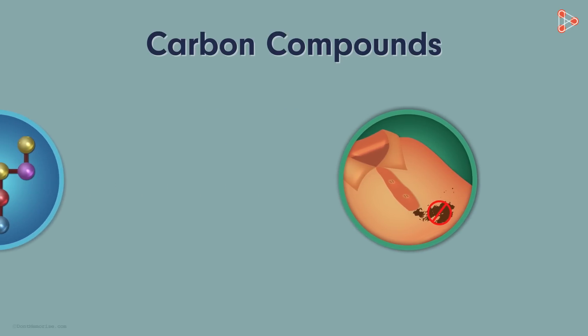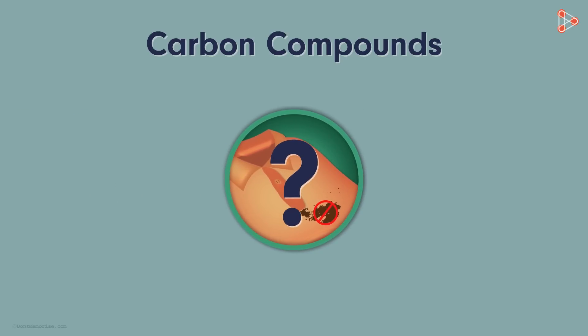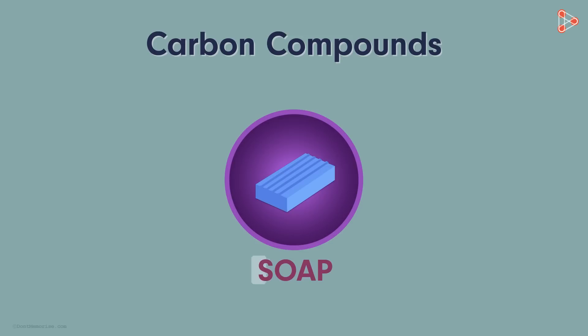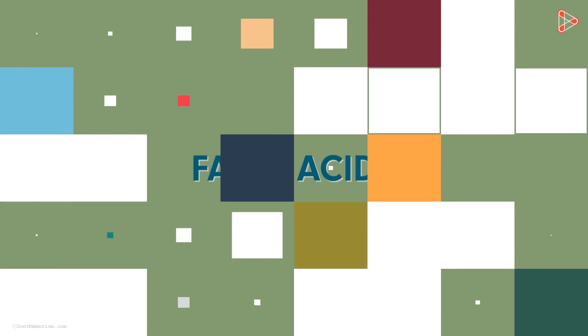Did I just say cleaning our clothes? Where do organic compounds come into picture for cleaning clothes? Can you guess? That's right — in the form of soaps. Wait, what? Are soaps carbon compounds? Yes, they are. Soaps are chemically the salts of fatty acids. Let's understand this.